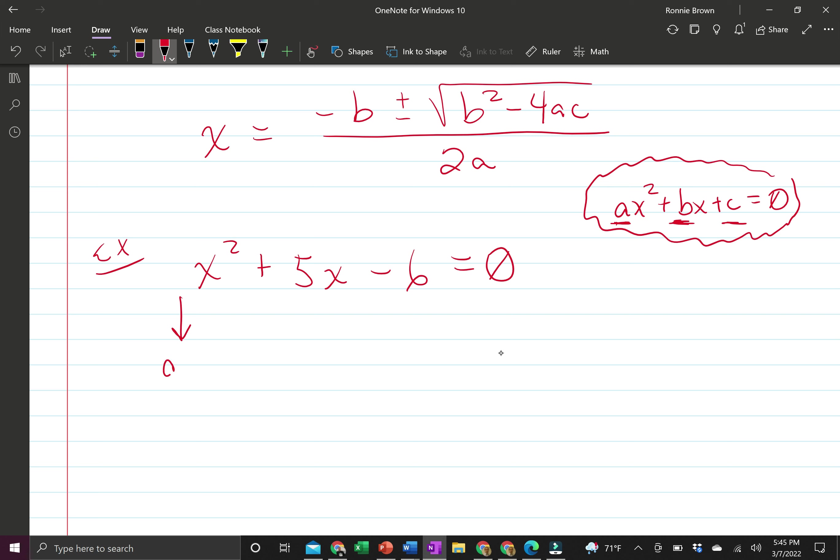For our example, our a value is 1 because there's an invisible 1 in front of every variable. Our b value is 5, and our c value is negative 6. That's so very important, having it in standard form. If it wasn't in standard form, then one of our signs would be incorrect. It must be in standard form first, and I'm going to do an example like that later.